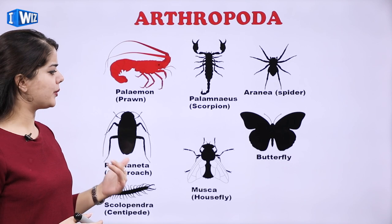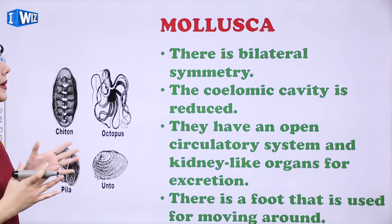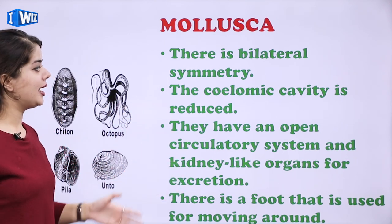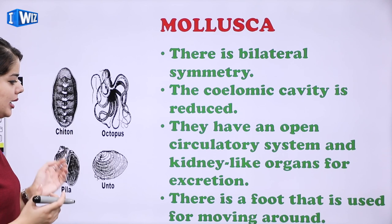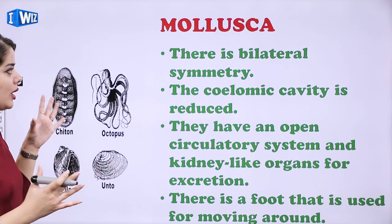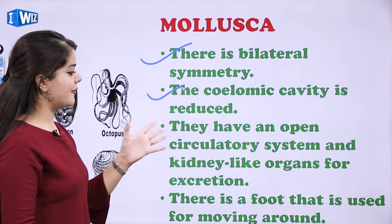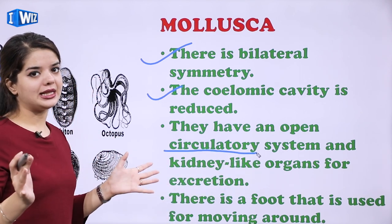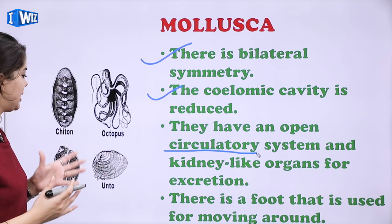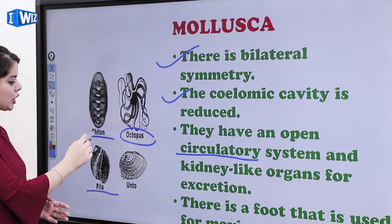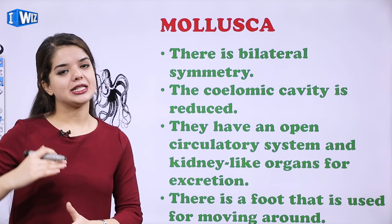Examples of Arthropoda are prawns, scorpion, spider, butterfly, housefly, and cockroach. Then we have Mollusca — there is bilateral symmetry, the coelomic cavity is reduced, they have an open circulatory system, and kidney-like organs for excretion. They also have a foot that is used for moving around. Examples are octopus, Pila, and Chiton.